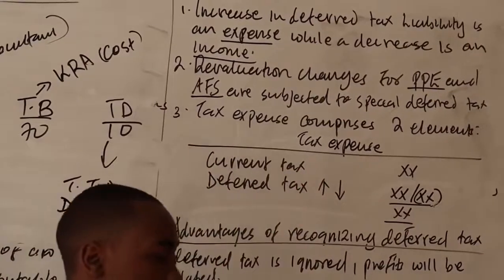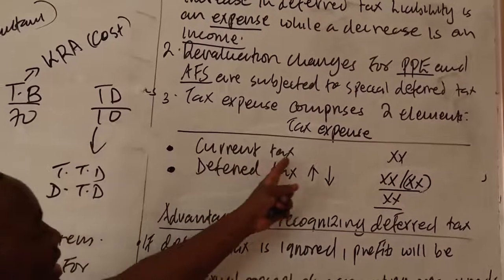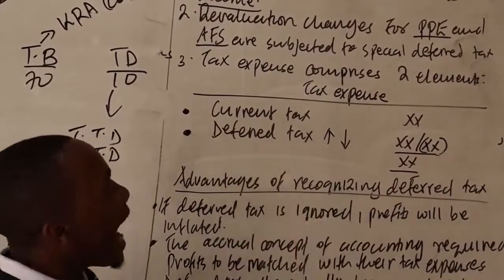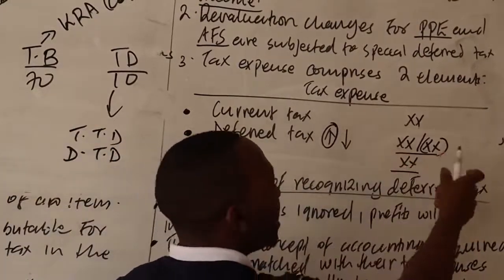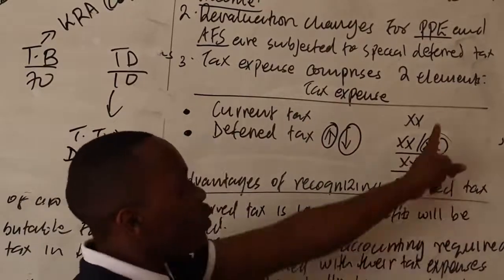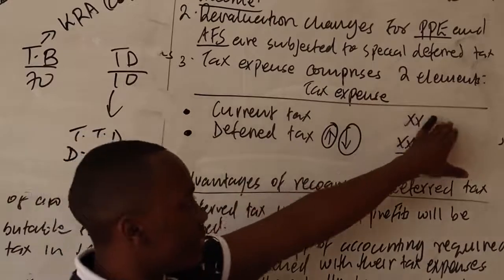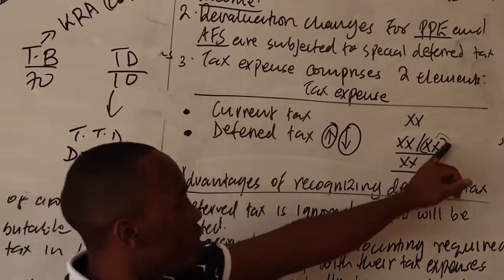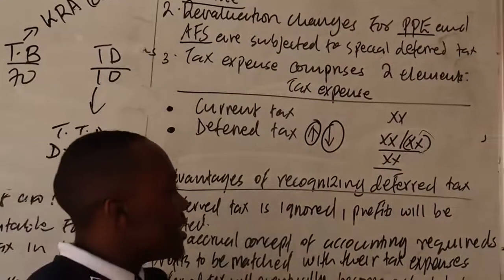PPE — property, plant and equipment — and available-for-sale financial assets, being long-term assets, are subjected to special deferred tax treatment. NB three: tax expense comprises two elements — current tax and changes in deferred tax. Current tax is based on profit for the period. For deferred tax: if there's an increase it becomes an expense you add; if there's a decrease it becomes an income you deduct.